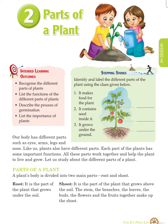Let us study about the different parts of a plant. A plant's body is divided into two main parts: root and shoot. Root is the part of the plant that grows under the soil. Shoot is the part of a plant that grows above the soil.